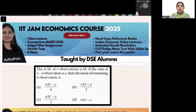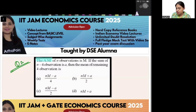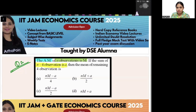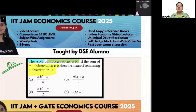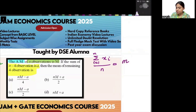Question number 2 is on your screen now. Try to solve this question yourself and post your answer in the chat window. The question: the arithmetic mean of n observations is m. The mean of n observations is m, so the sum of n observations divided by n equals m, meaning the sum of n observations is n into m.